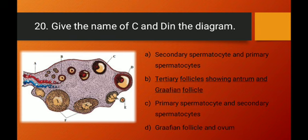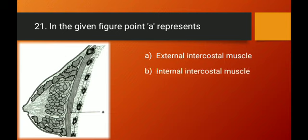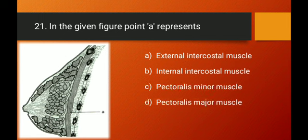Question number twenty-one: in the given diagram of the mammary gland (breast), what does label A represent? The options are external intercostal muscle, internal intercostal muscle, pectoralis minor muscle, and pectoralis major muscle. According to our textbook diagram, A represents the pectoralis major muscle. Option D is the right answer.